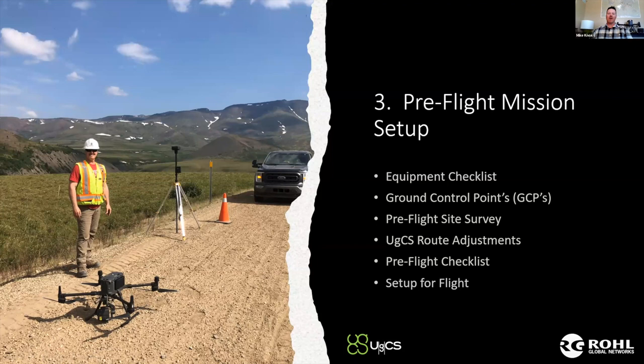For pre-flight setup, check all equipment, lay out ground control points, and do a pre-flight safety survey — scan the actual area in the field. Even with a predefined route, you may encounter things that don't appear on Google Earth, as that imagery could be five to ten years old. See what's in the surroundings and make route adjustments as necessary, then run through your pre-flight checklist.